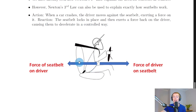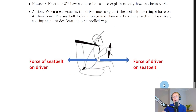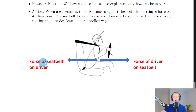The reaction force is that the seat belt locks in place and then exerts a force back on the driver, causing them to decelerate in a controlled way. A top tip when thinking about Newton pairs is to just reorder the words. So instead of saying the force of the driver on the seat belt, we say the force of the seat belt on the driver - we've literally just swapped the words around, and this trick usually works for lots of situations involving Newton's Third Law.